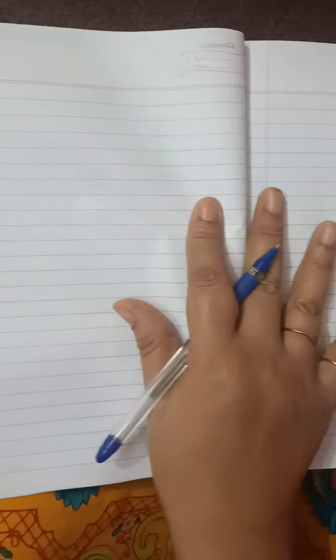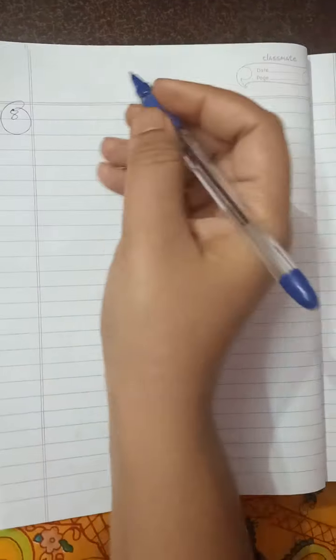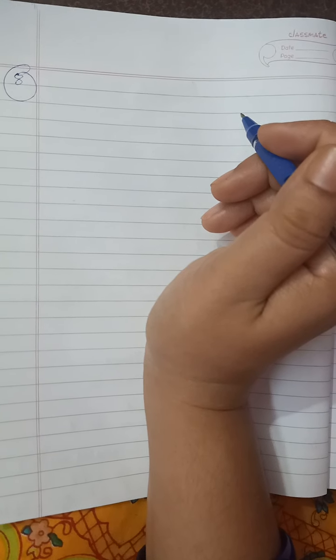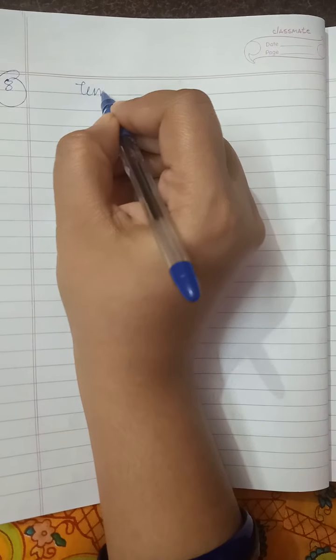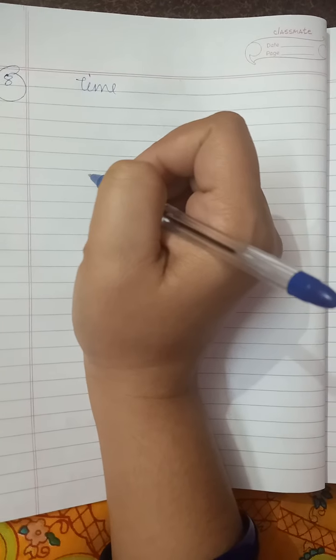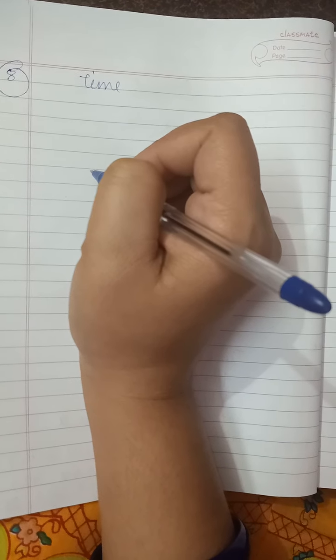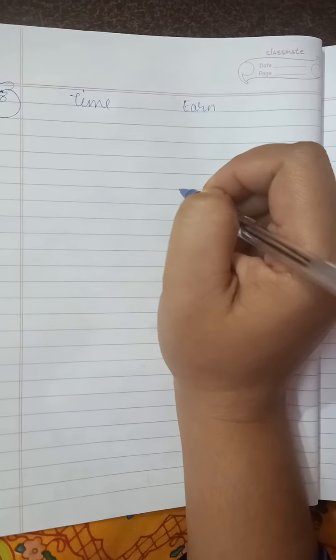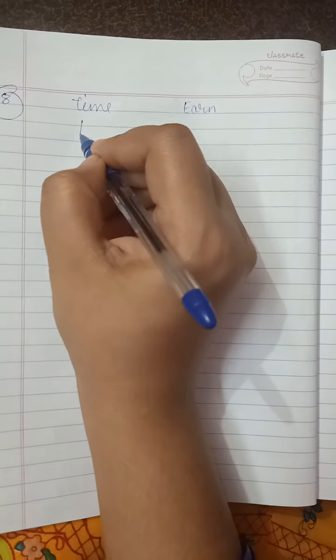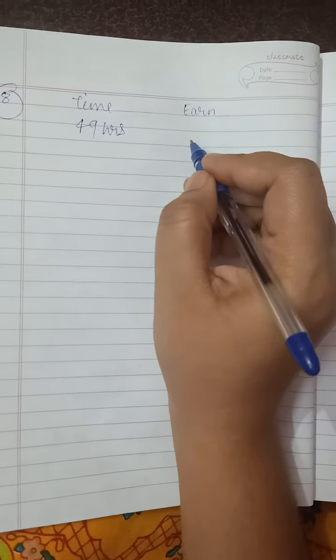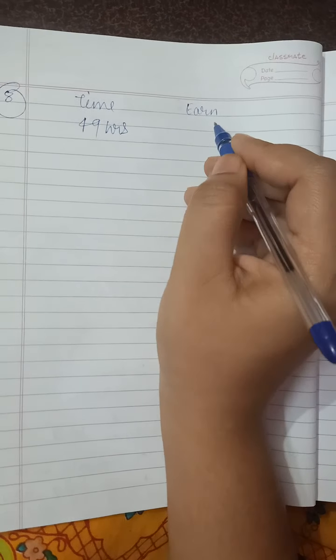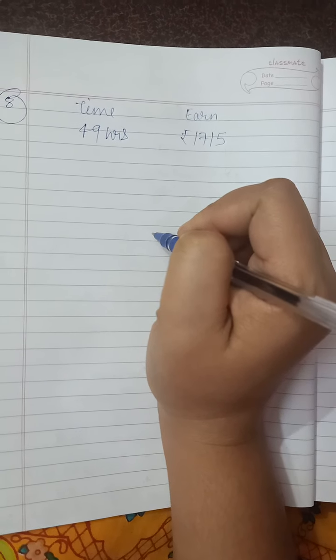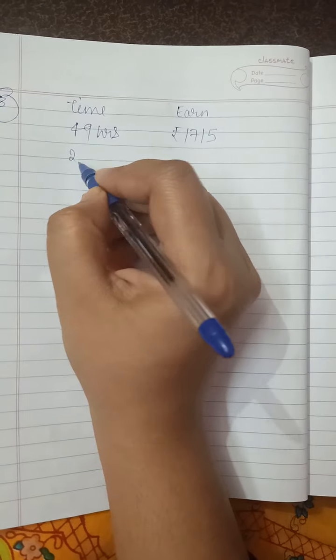Next we have other questions that are also the same. Now I'm going to explain question number 8. All questions are the same, only the data is different. In the eighth question, we have a man working for 49 hours.